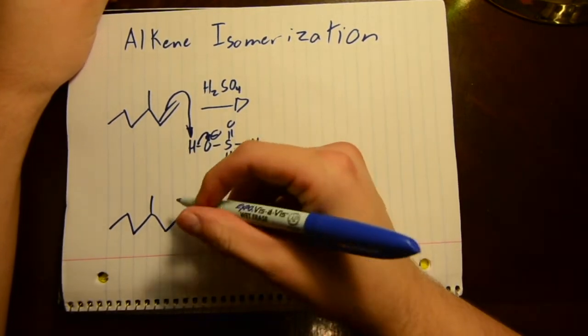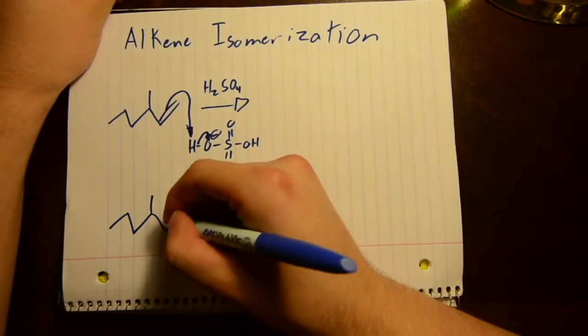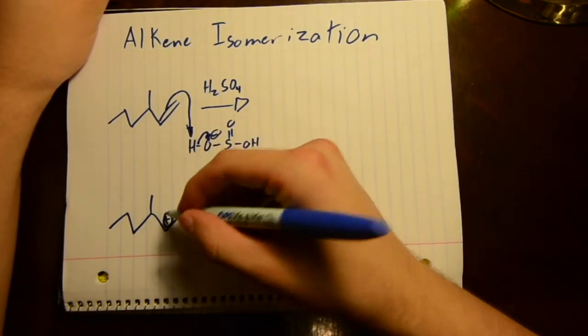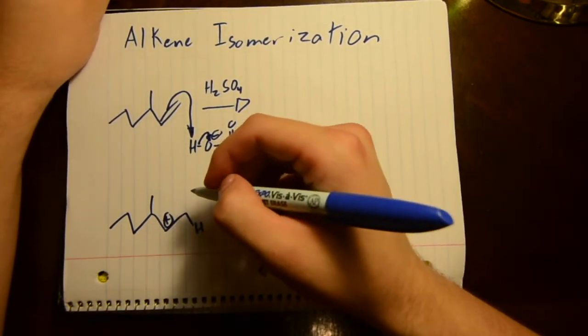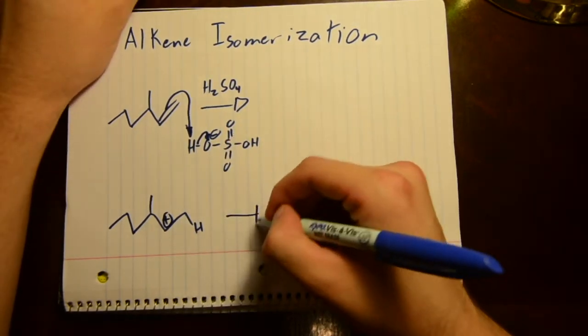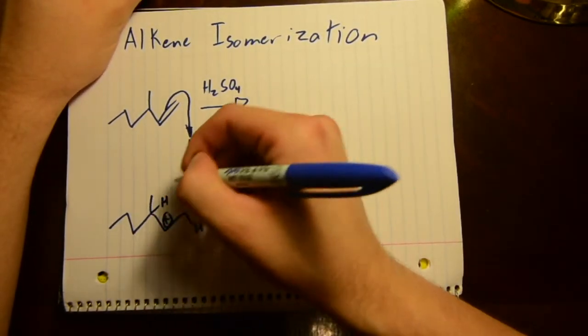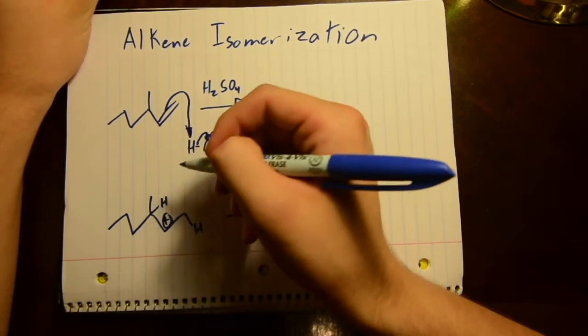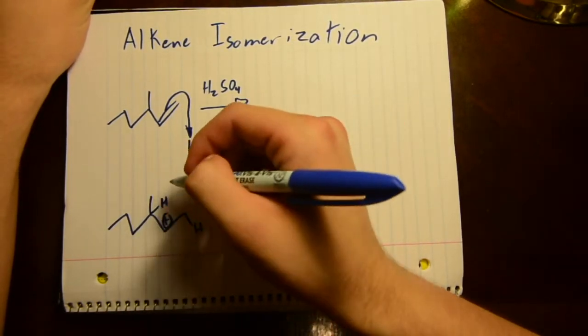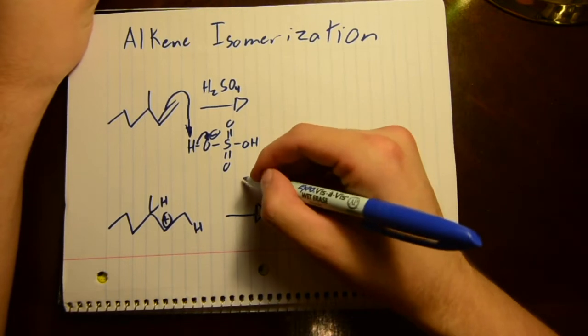Because it's a carbon and it doesn't have any charges, you have a hydrogen there. So the conjugate base of this acid, which is negative, will take a hydrogen from this molecule.